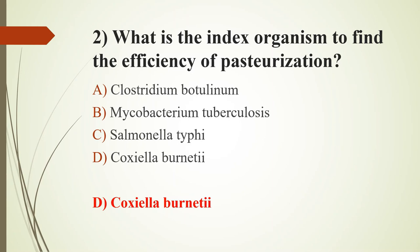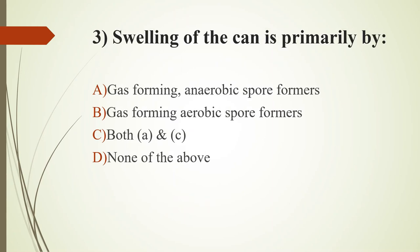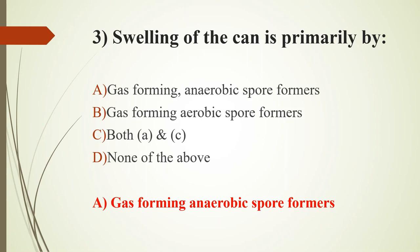Third question: swelling of the can is primarily caused by — option A, gas-forming anaerobic spore formers; option B, gas-forming aerobic spore formers; option C, both A and C; option D, none of the above. The answer is option A, gas-forming anaerobic spore formers. Clostridium butyricum and Clostridium spore formers produce only gas under anaerobic conditions, mainly in canned dairy products like processed cheese and concentrated milk.